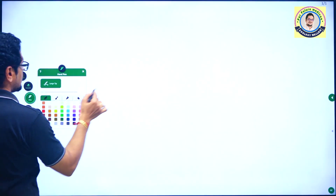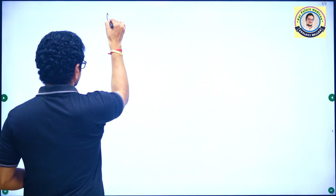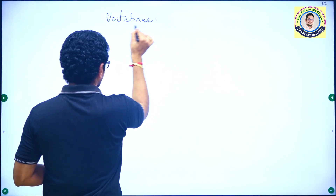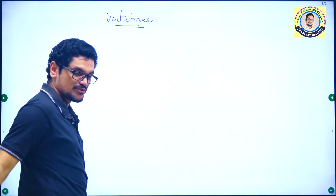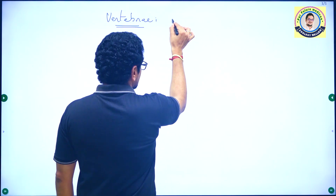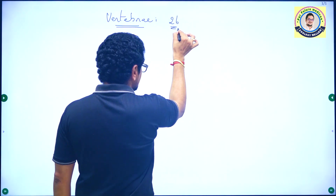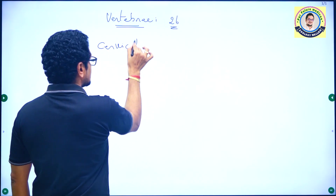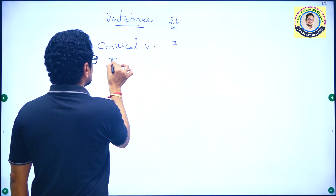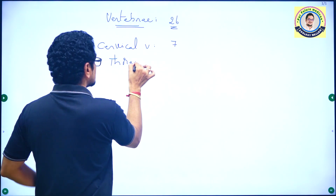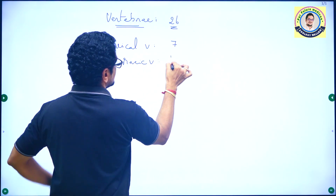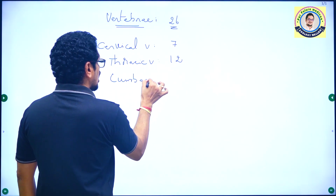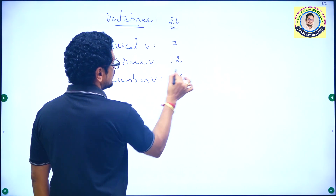How many vertebrae are present in the human body? How many vertebrae are present in the adult human being? Actually, 26 vertebrae are present. Cervical vertebrae are 7 in number, thoracic vertebrae are 12 in number, and lumbar vertebrae are 5 in number.